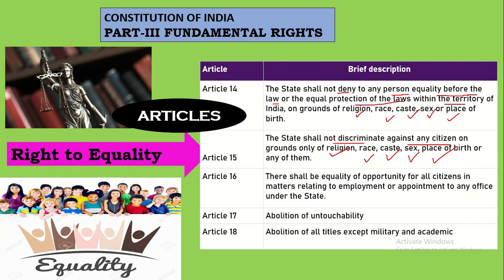Article 16 deals with providing equality of opportunities for all citizens related to appointment to any office under the state or the government. Article 17 deals with the abolition of untouchability — in any form, the practice of untouchability is prohibited according to Article 17.